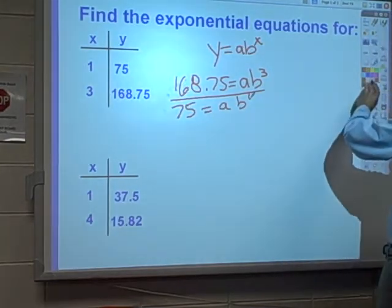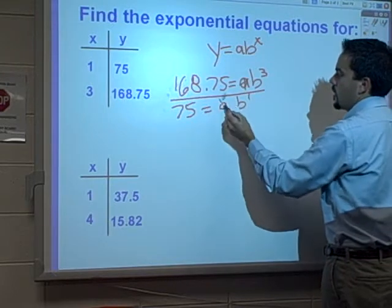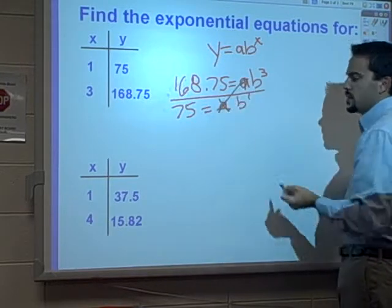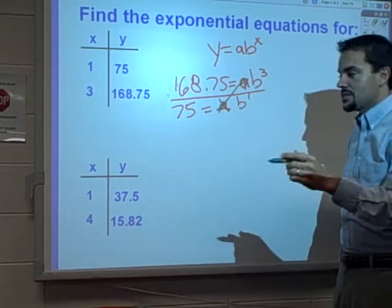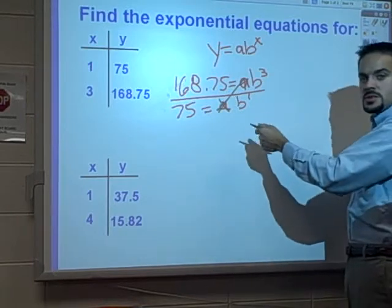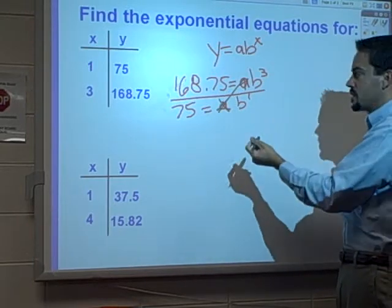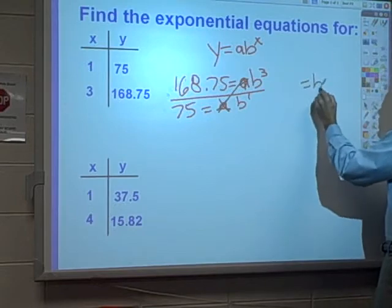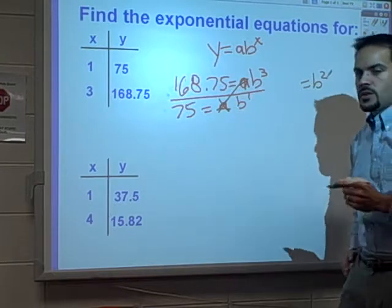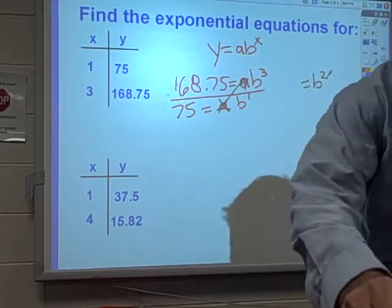And if you recall from class, a's cancel out in the numerator and denominator. That worked out nicely every single time. I've got three b's in the numerator, one b in the denominator, so that leaves me with b squared. And then I just take and divide those two numbers, the 168.75 and 75.